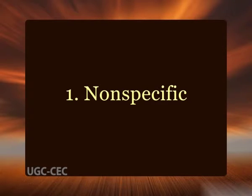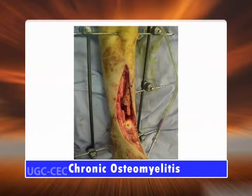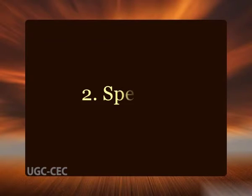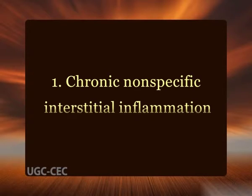Conventionally, chronic inflammation is subdivided into two types. First, non-specific: when the irritant substance produces a non-specific chronic inflammatory reaction with the formation of granulation tissue and healing by fibrosis — for example, chronic osteomyelitis and chronic ulcer. Second, specific: when the injurious agent causes a characteristic histological tissue response — for example, tuberculosis, leprosy, and syphilis. On the basis of histological features, chronic inflammation is divided into three types, the first being chronic non-specific interstitial inflammation, characterized by non-specific inflammatory cell infiltration.